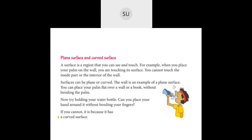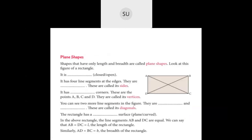Then we saw what is a plain surface and a curved surface. Surfaces can be either plain or curved. A wall or a book is an example of a plain surface — whenever you can place your palm flat over any surface without bending your palm or fingers. But when you're holding a water bottle, you have to bend your fingers. So when you cannot place your hand flatly on a surface and need to bend it, it is called a curved surface.